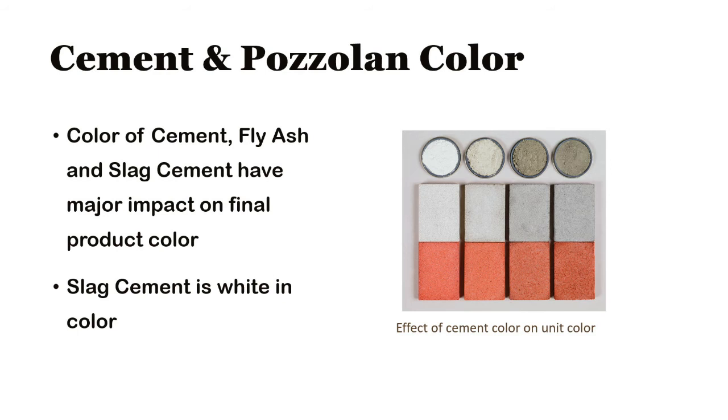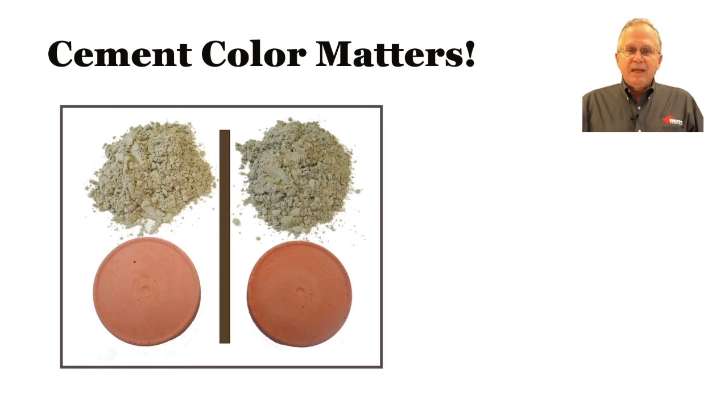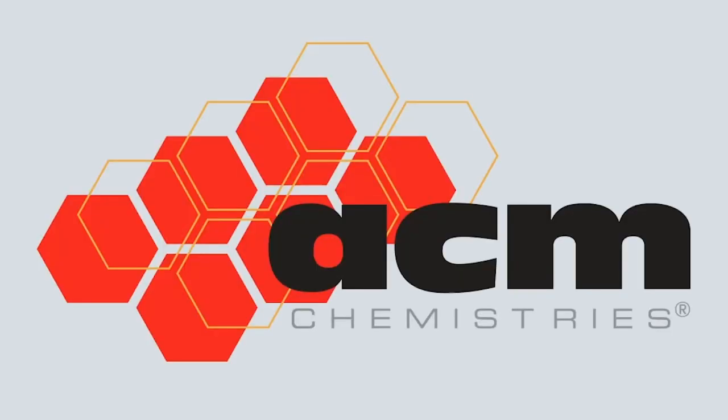This helps bust the second myth: that the color of cement doesn't impact the final color of our concrete products. In fact, a change in the color of our cement can have a significant effect on the final color. That's it for today. Next time in part two, we'll look at inline measurements — tests we do on the wet side during production to help us make quality products that meet the strength and durability requirements our customers expect. Feel free to check back with us anytime at acmcam.com, where you can get more information and more videos on Concrete 101.